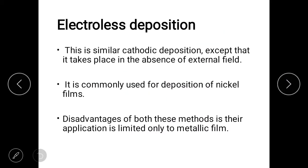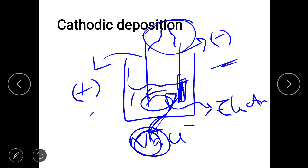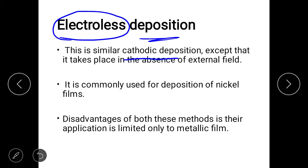The next method is electroless deposition. As the name indicates, this is a deposition in the absence of electricity. Electroless means no electricity or external field is applied — deposition occurs without it. It is similar to cathodic deposition except there is no applied electrical field. This type of electroless deposition is mainly used for the deposition of nickel film.